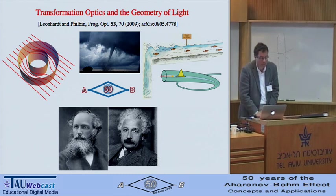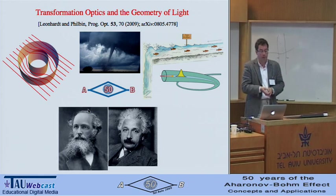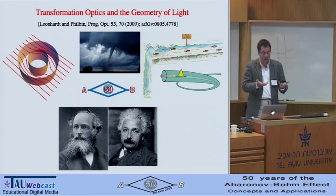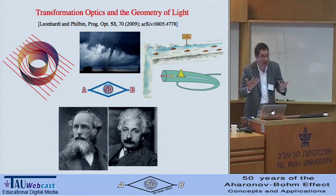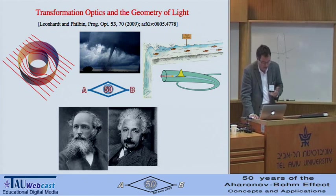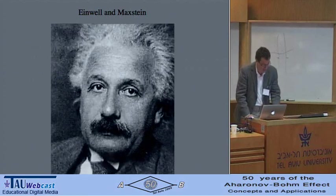So what I've tried to explain is some possible connections between different effects — in particular the birthday effect of this conference, the Aharonov-Bohm effect, and Hawking radiation. Both are manifestations of space-time transformations in transformation optics, where you use the fact that a dielectric material acts like a geometry, and if that material is moving it's a space-time geometry. This connects Maxwell's electromagnetism and Einstein's general theory of relativity to the extent that they become transformed into each other. Thank you very much.